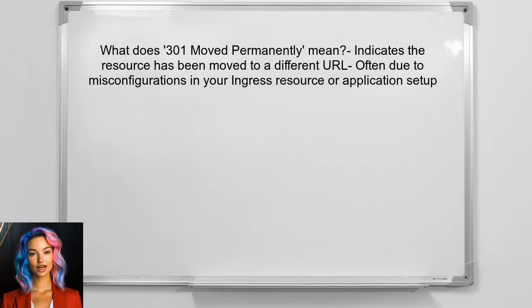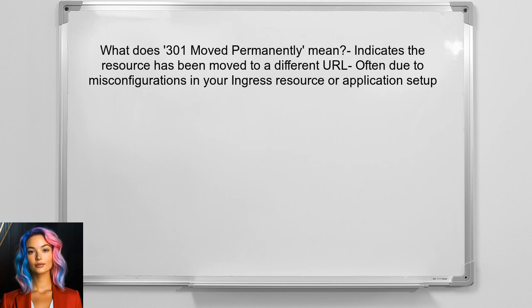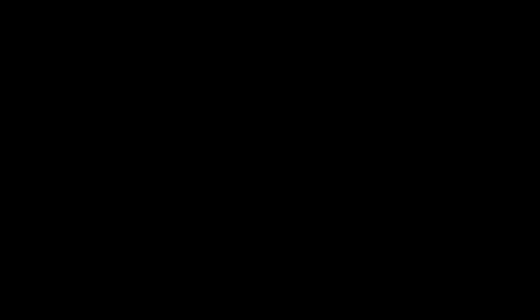So, what does this 301 moved permanently error mean? Essentially, it indicates that the resource you are trying to access has been moved to a different URL. This often happens due to misconfigurations in your ingress resource or the way your application is set up.